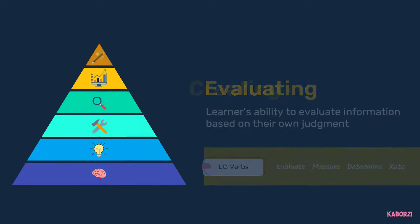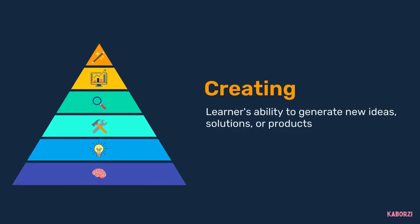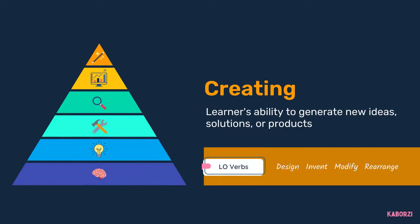Finally, creating — this refers to the learner's ability to generate new ideas, solutions, or products. This is the most complicated of the categories and therefore sits at the top of the pyramid. To create learning objectives around creating, use verbs like design, invent, modify, or rearrange.